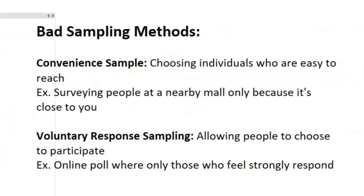Now let's talk about some bad sampling methods. Convenience sample is where you choose people who are easy to reach or access — for example, surveying people at a nearby mall only because it's close to you. The other common bad sampling method is voluntary response sampling, where you allow people to choose to participate. If you put out an online poll, people who feel strongly about that issue are more likely to respond, which introduces bias.